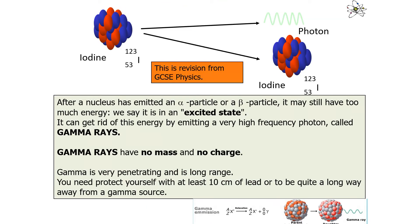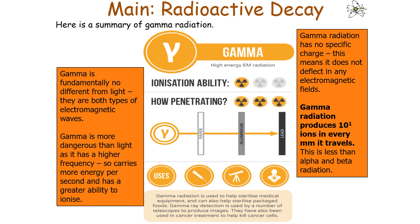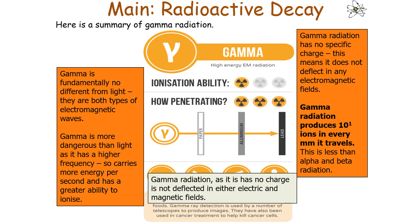After a nucleus emits an alpha or beta particle, it can have too much energy — we say it's in an excited state. It gets rid of this energy by emitting a very high-frequency photon called a gamma ray, returning to the ground state. Gamma rays have no mass and no charge, are very penetrating and have a long range. Protection requires at least 10 centimetres of lead or a large distance from the source. Gamma radiation has no specific charge, produces 10¹ ions per millimetre, and as it has no charge, is not deflected in electrical or magnetic fields.